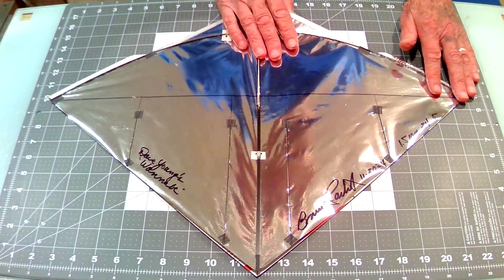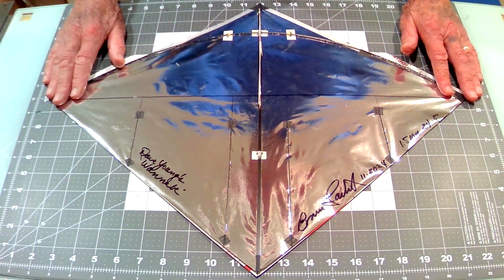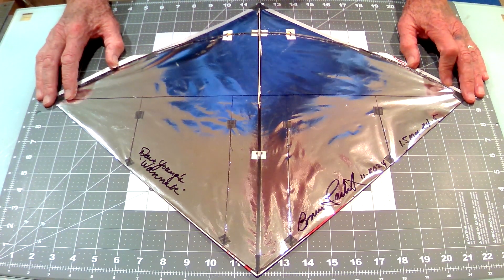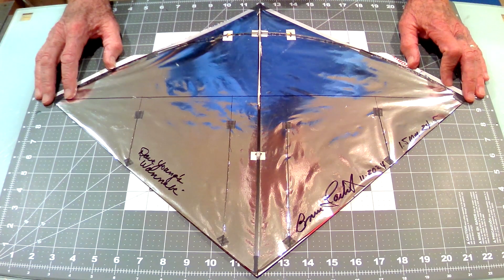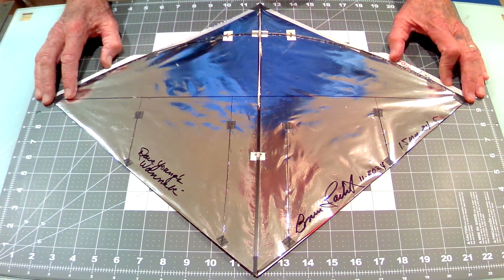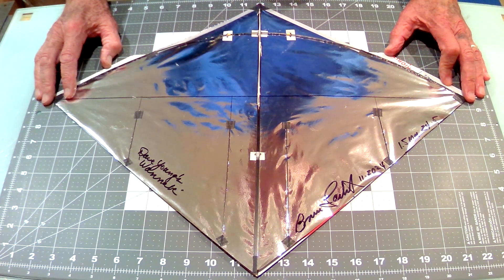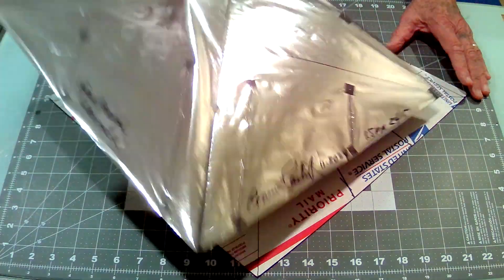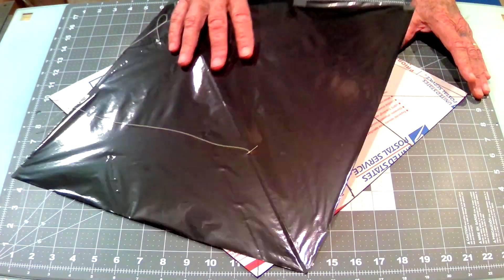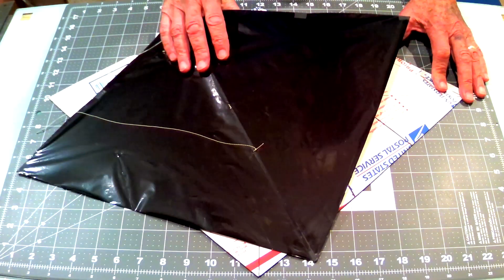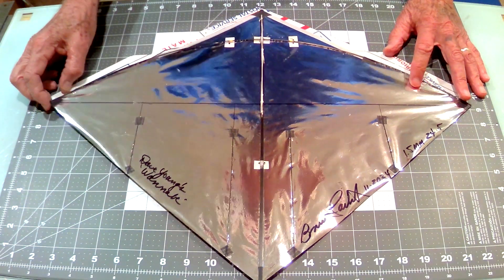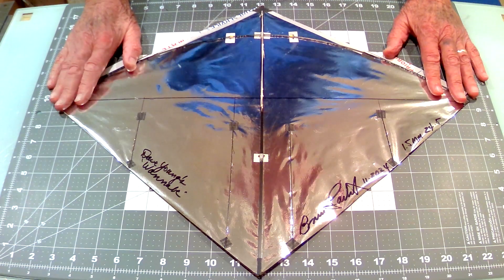I've flown it in two different wind conditions. One was from zero to about three miles an hour, very light wind. And this particular kite right here that I made flew incredibly well. Absolutely unbelievable, in fact. So in light wind, this baby is a beauty.